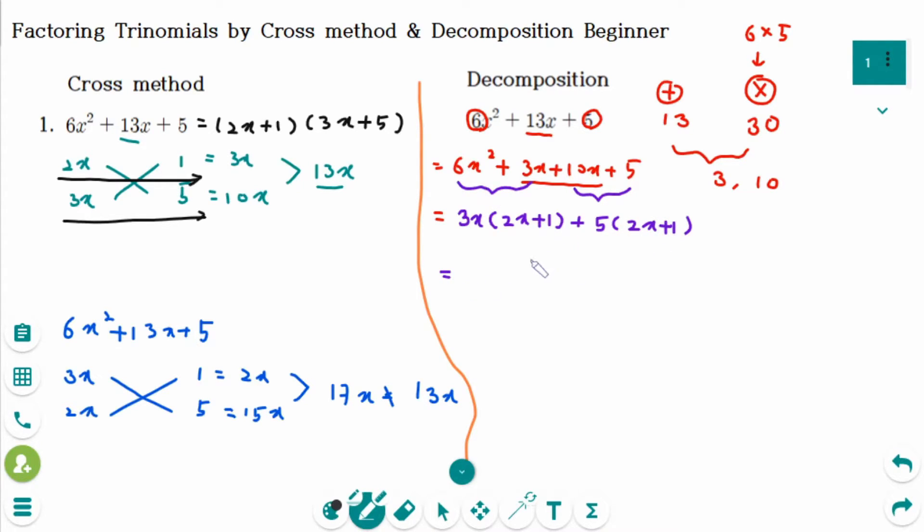And then take out common factor, which is 2x plus 1. And 3x plus 5 is inside the bracket. So using cross method or decomposition, you have the same answer.